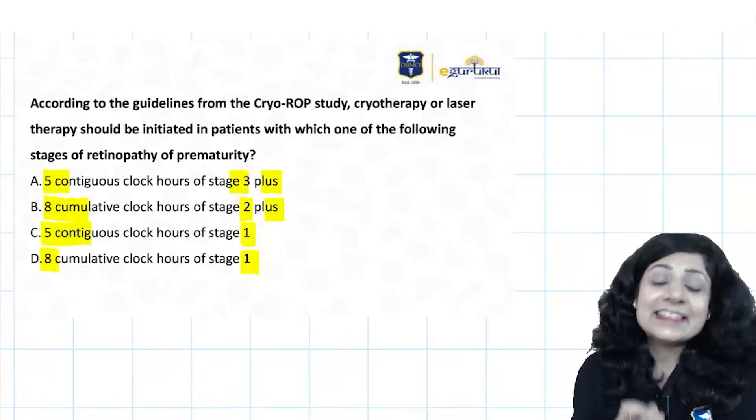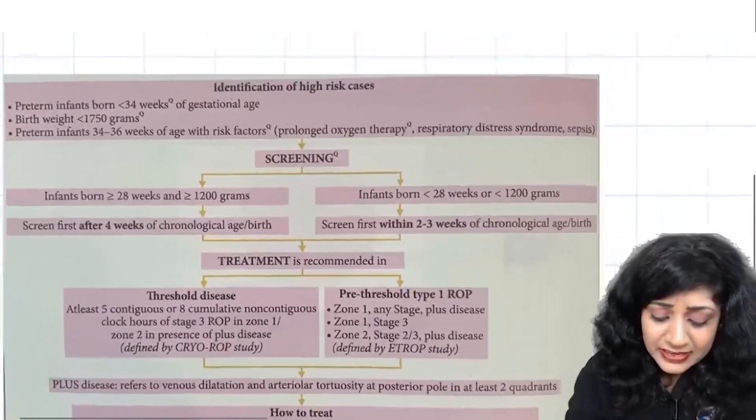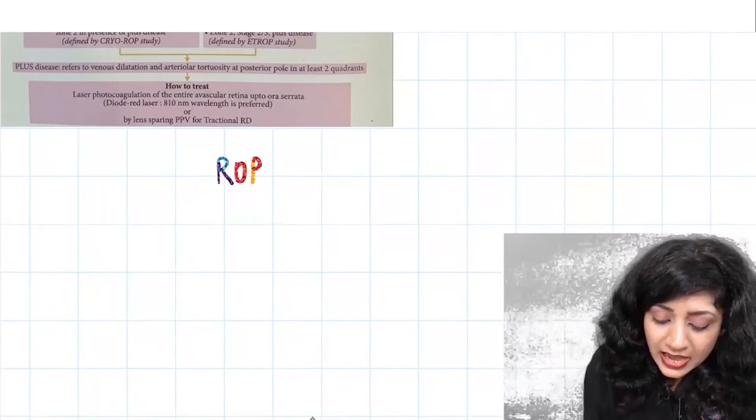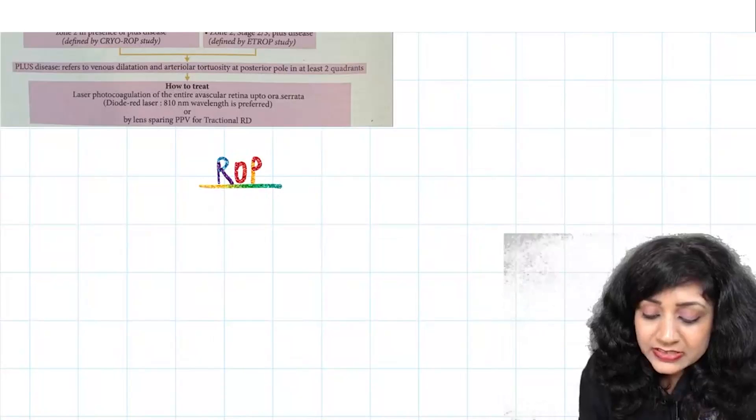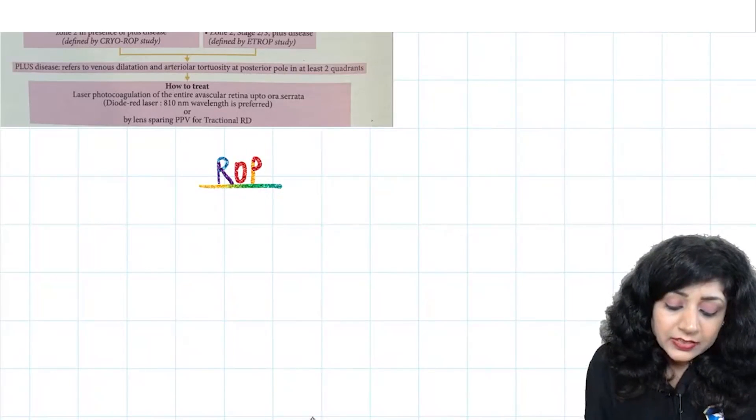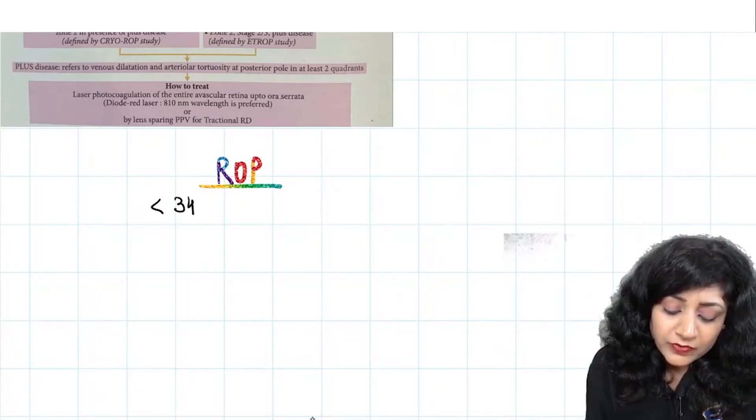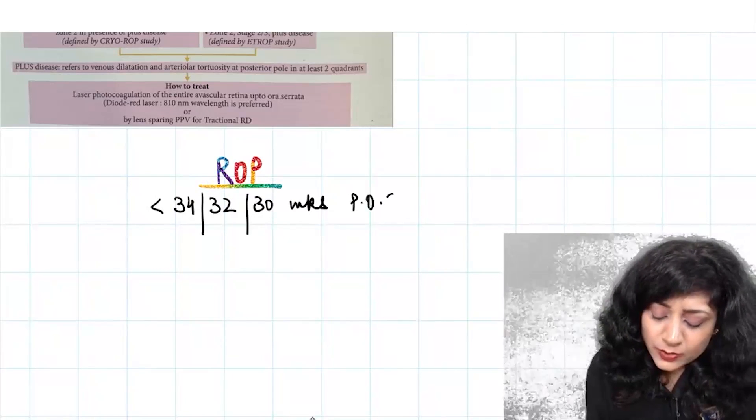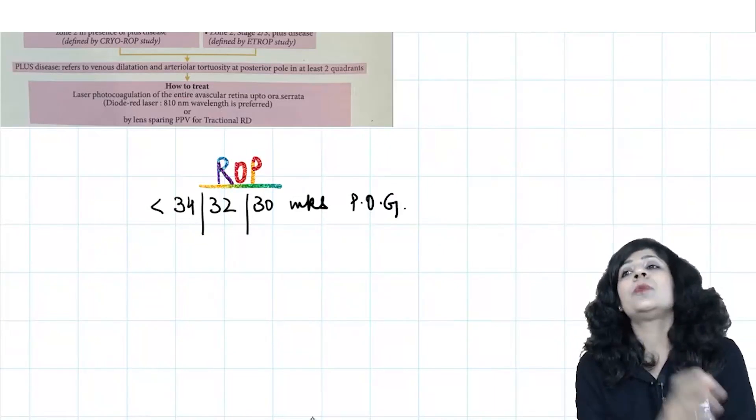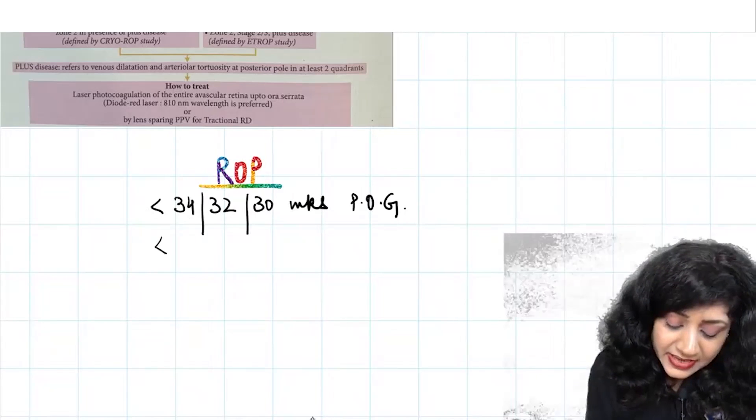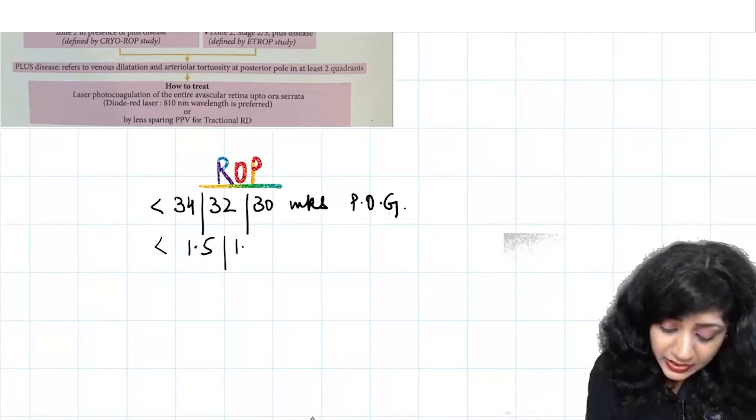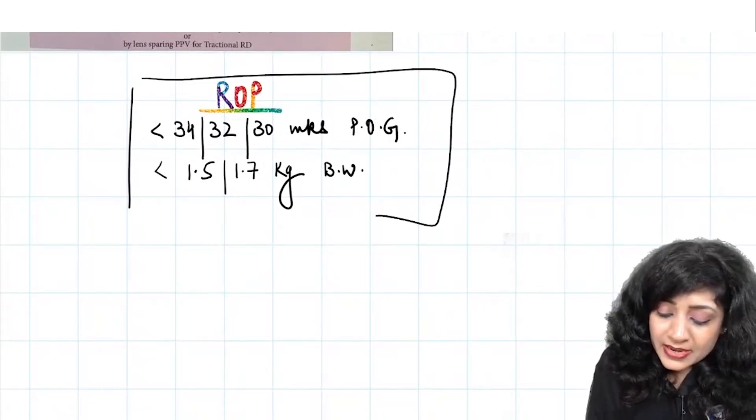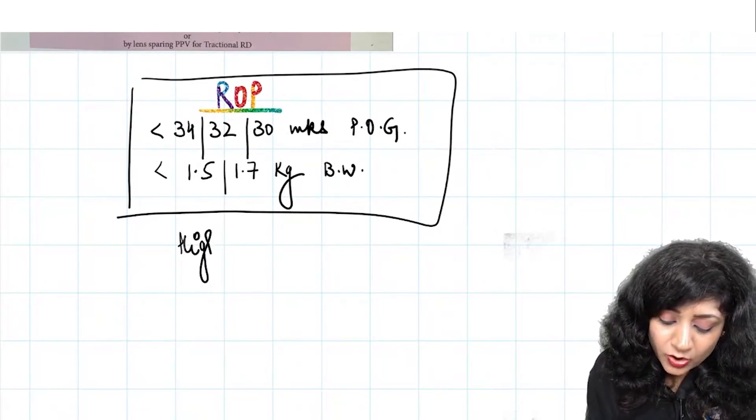Let's see some important facts about ROP. What are the high risk factors? When talking about ROP, certain things are very important. Gestational age less than 34 weeks, sometimes 32 weeks or even 30 weeks period of gestation. The baby is immature, and less than 1.5 kg, specifically in India we use 1.7 kg birth weight.